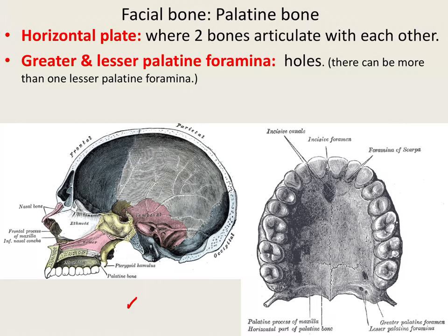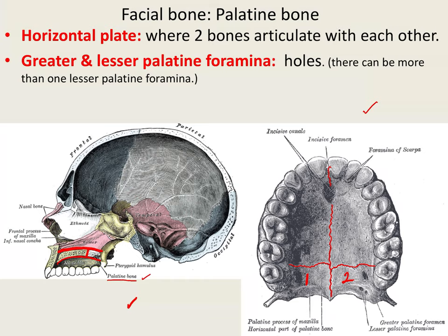The next bone is the palatine bones. Looking at this mid-sagittal section, the palatine bone helps form the hard palate — the roof of your mouth supported by bone. When you put your tongue to the roof of your mouth, you're touching two separate bones: the anterior bone is the maxilla, and the posterior bone is the palatine bone. Looking at the roof of the mouth, there are two palatine bones — here's one and here's another.